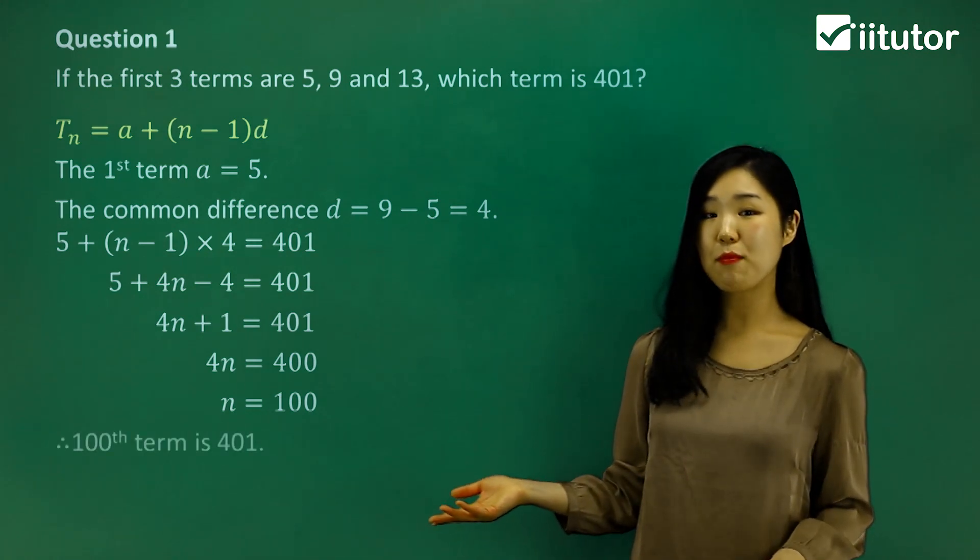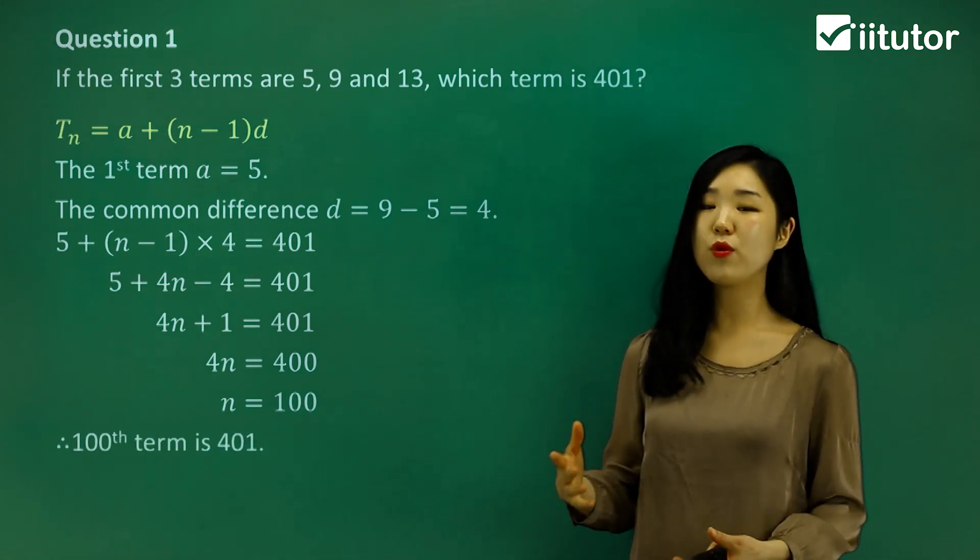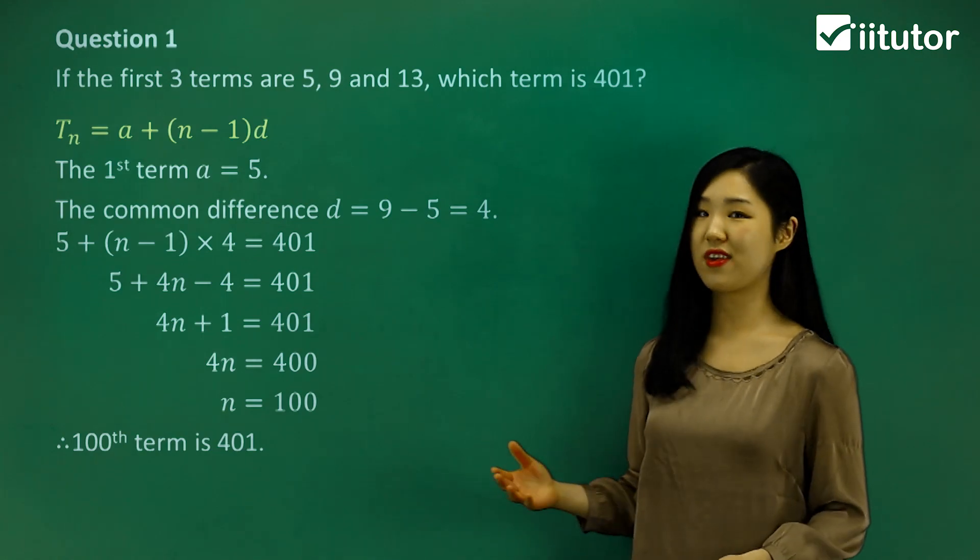What does that mean? That means the hundredth term will give us 401. So the answer was the hundredth term.